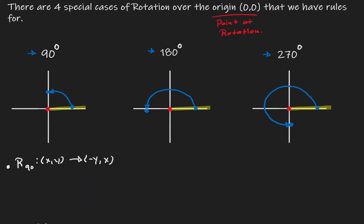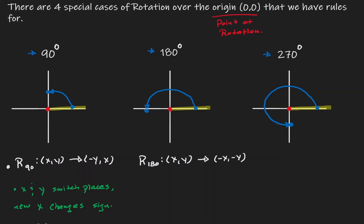One way to think about the 90° rule is that the x and y values switch places, and then we switch the sign of the new x. For 180 degrees, given a coordinate point (x, y), the image is defined as (-x, -y) — we simply switch the sign of both x and y. For 270 degrees, given any coordinate point (x, y), the image is located at (y, -x). Think of it as: x and y switch places, and the sign of the new y changes.